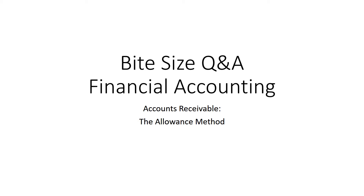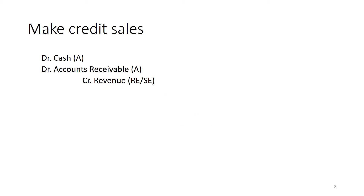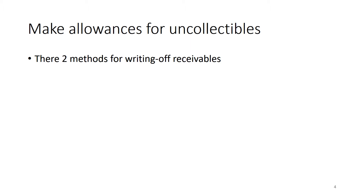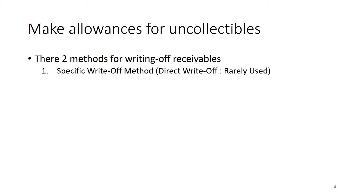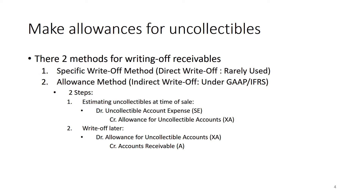Let's talk about the allowance method. Imagine you're a firm and you're making a sale. Sometimes the customer will pay you in cash and sometimes they'll say I'll pay you later — that's what's known as accounts receivable. But what happens if not everyone pays us the money they owe us? There are two methodologies for writing off receivables when customers don't pay. The first is the specific write-off method, which is rarely used. The second is the allowance method, an indirect write-off method.